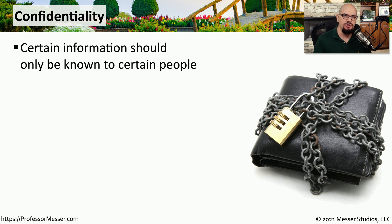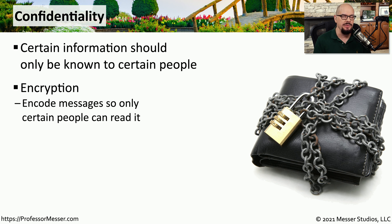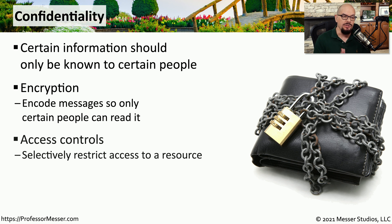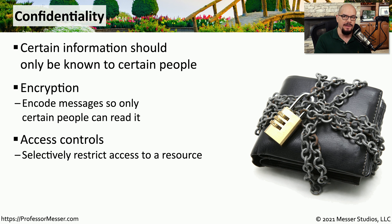Confidentiality is about making sure the data remains private. We want to be sure that only certain information is available to certain people. We often use encryption to be able to do this — if we can encrypt data and send it to a third party, we know that no one in between will be able to read or understand the information. We could also use access controls to provide confidentiality, making sure that certain people have read access to data while others may have no access to the same data.